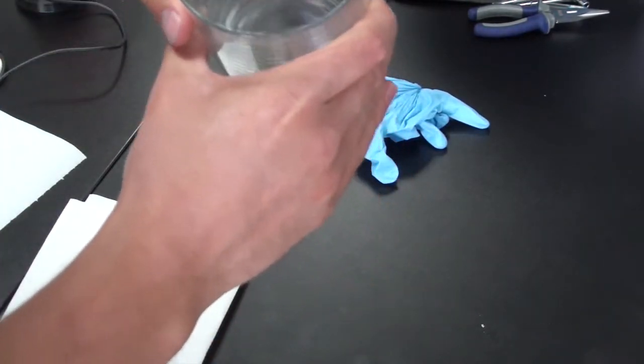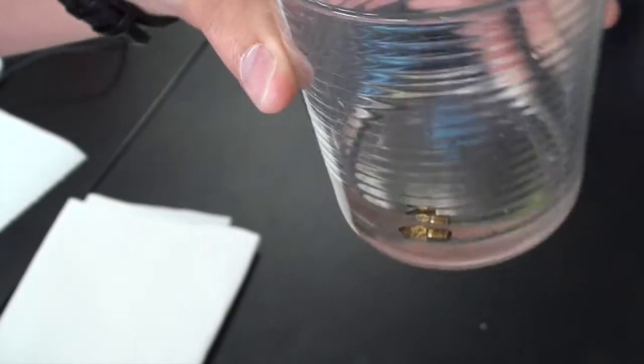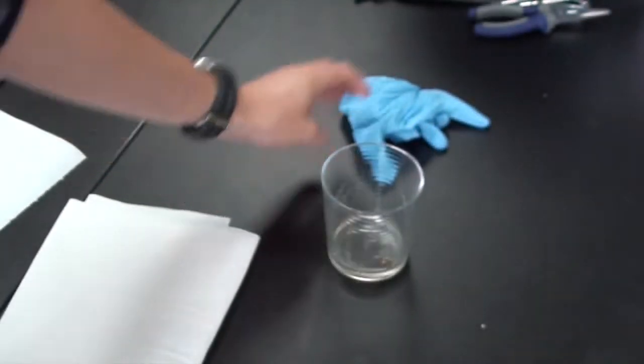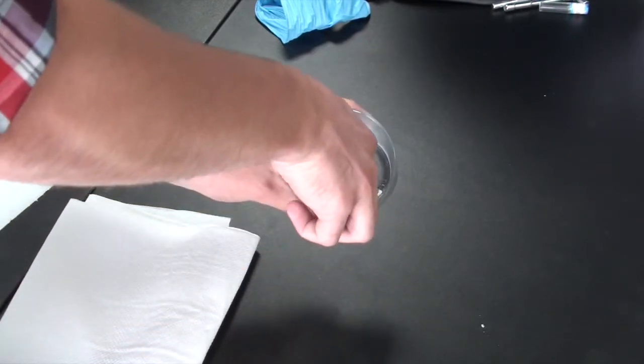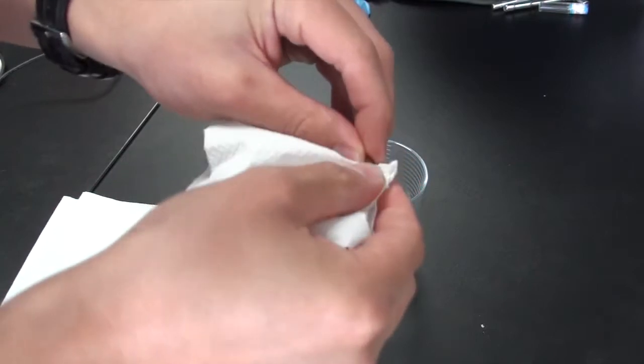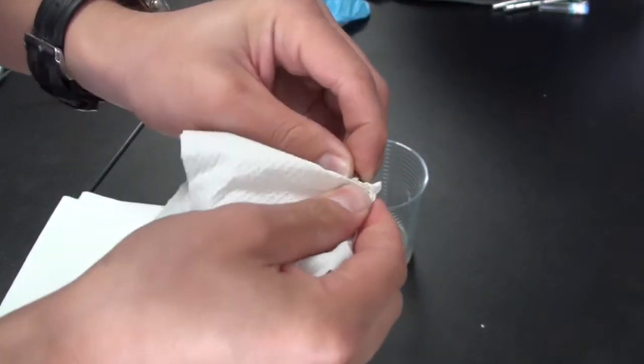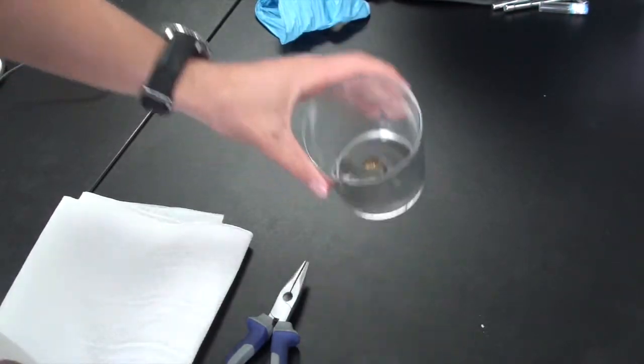We put a rubber glove over the top just to stop it evaporating as well. As you can see it started already to eat away at any of that ABS that is stuck on the nozzle and soften it up. So if we take it out now, again using pliers, and just clean it up with some kitchen roll.